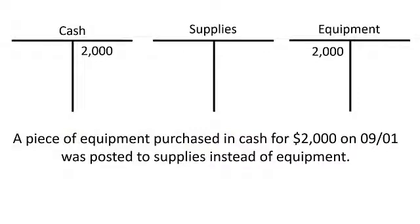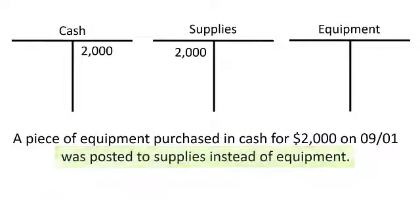The purchase would be a debit to equipment. But according to our notes, we made a mistake — instead of debiting equipment, we actually debited supplies. So now our correcting entry needs to fix that so that the equipment has the debit.